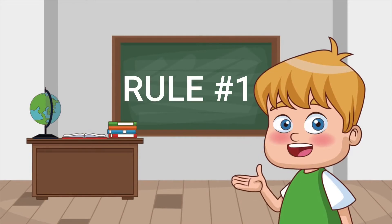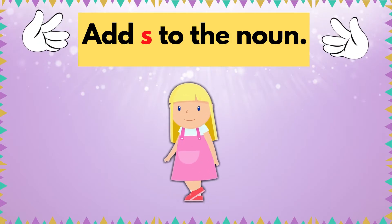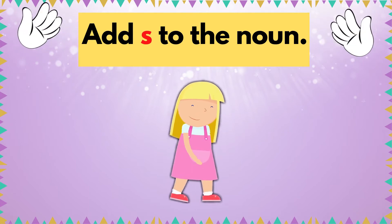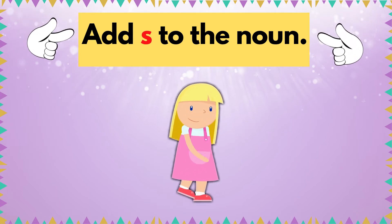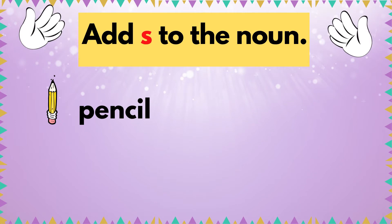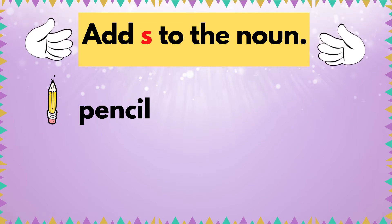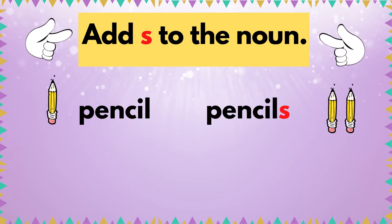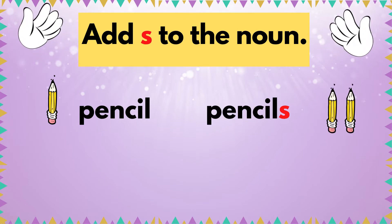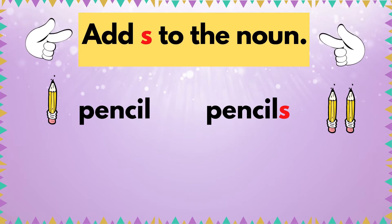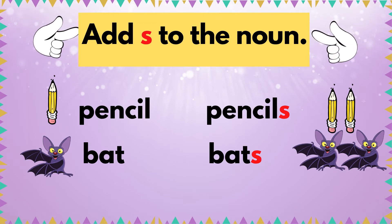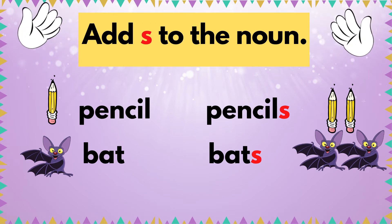Rule number one: singular nouns form plural nouns by adding S to the noun. Let's see the examples. Pencil — how are we going to change pencil into a plural noun? We have to add S at the end of the word. Pencil becomes pencils. Bat becomes bats. You see how we added S at the end of each word?